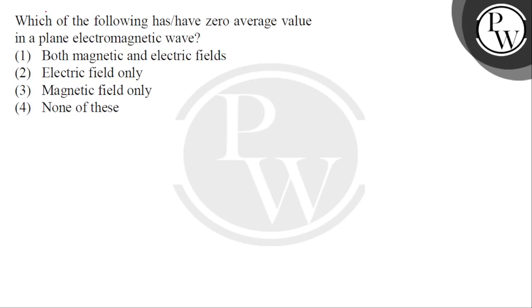Hello, let's read the question. Which of the following has or have zero average value in a plane electromagnetic wave? Options are: both magnetic and electric fields, second electric field only, third magnetic field only, and fourth none of these.